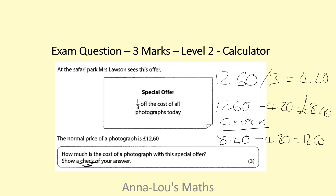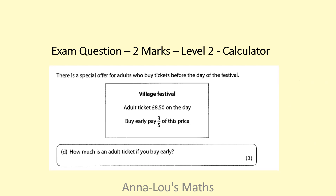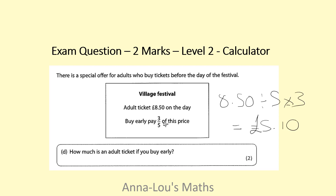So mark one for 420, mark two for 840, and mark three for the check. Now the last question — a level two calculator two-marker: buy early, pay three-fifths of the price, original £8.50. So 8.50 divided by five, times by three gives £5.10. Nothing else needed — a ticket costs £5.10. These last two questions show the difference between 'of' and 'off': in this final question she was paying three-fifths of the price, and in the one before she was getting a third off the price. Read the question fully.